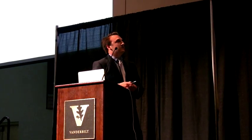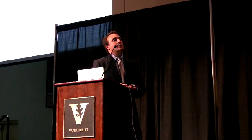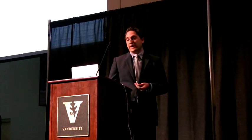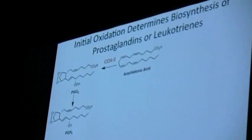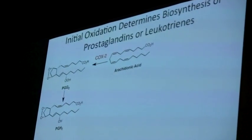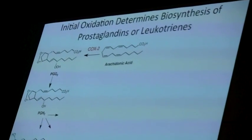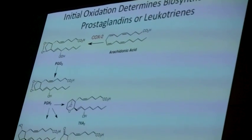Traditionally, it's believed that from arachidonic acid, the initial oxidation determines which lipid mediator will be biosynthesized. If arachidonic acid is acted upon by cyclooxygenase-2 (COX-2), you arrive at PGG-2, an unstable intermediate which is quickly reduced to PGH-2. This serves as the starting point for synthesis of a variety of different prostaglandins and thromboxanes.